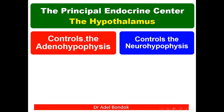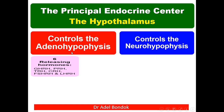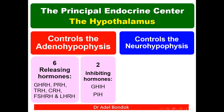The hypothalamus controls the adenohypophysis and the neurohypophysis. Adenohypophysis is the anterior pituitary; neurohypophysis is the posterior pituitary. The hypothalamus controls the adenohypophysis by secreting six releasing hormones: growth hormone releasing hormone, prolactin releasing hormone, thyrotropin releasing hormone, corticotropin releasing hormone, follicle stimulating hormone releasing hormone, and luteinizing hormone releasing hormone.